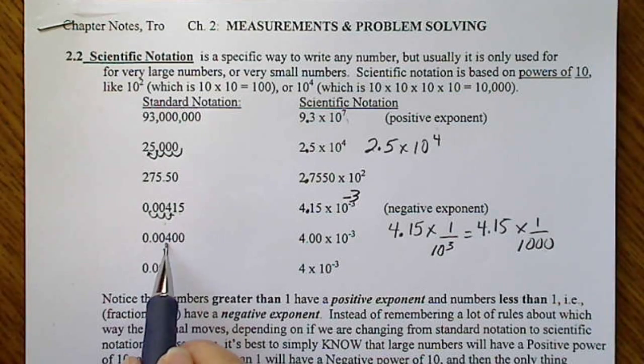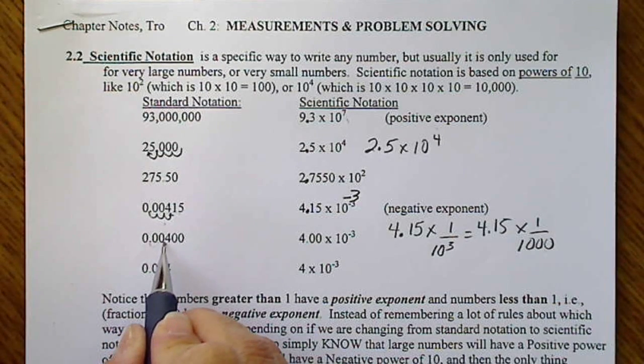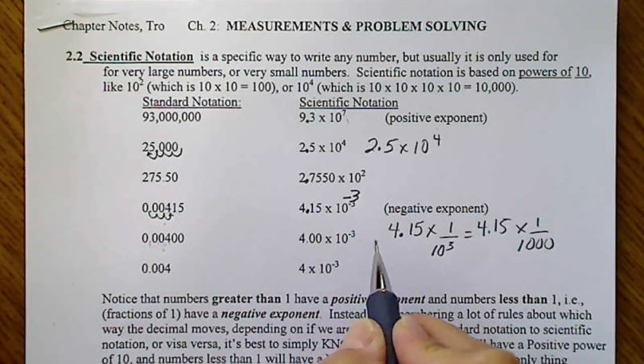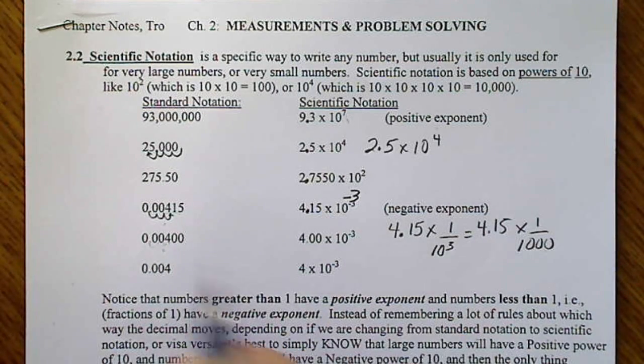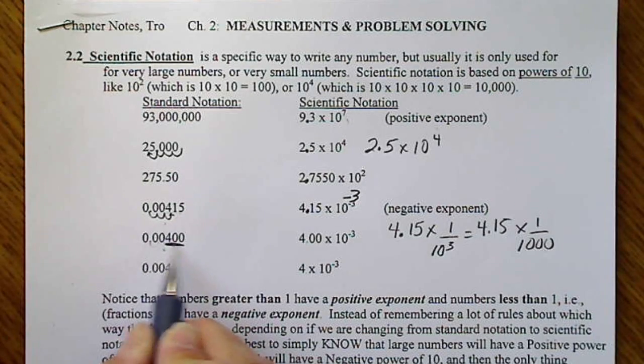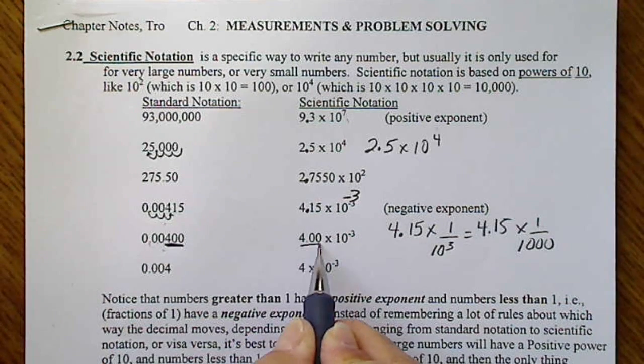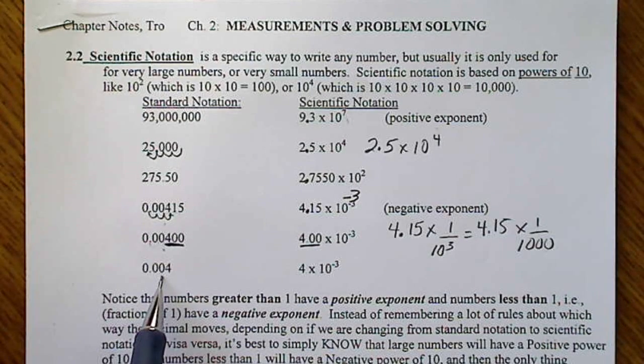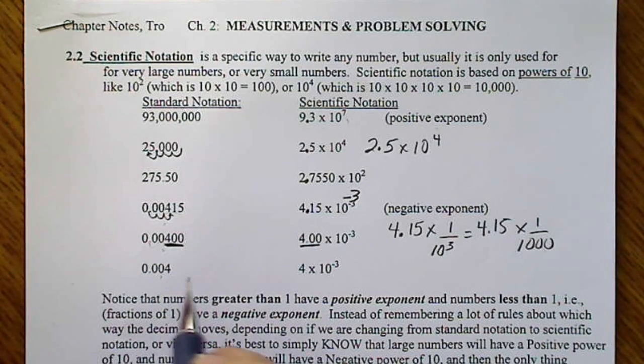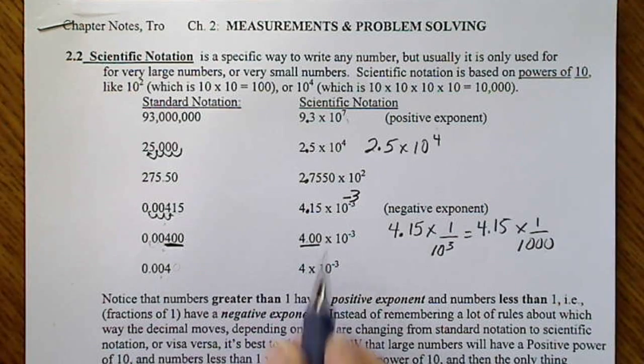If we put this number in scientific notation, again we move the decimal 3 places, and we have a power of negative 3 here. These zeros are included in the value, whereas the number below is the same numerical value, but we don't see anything written here, and so we would not write anything past this 4.